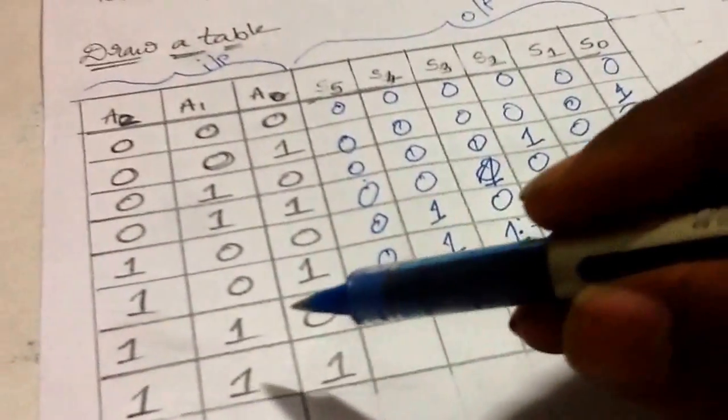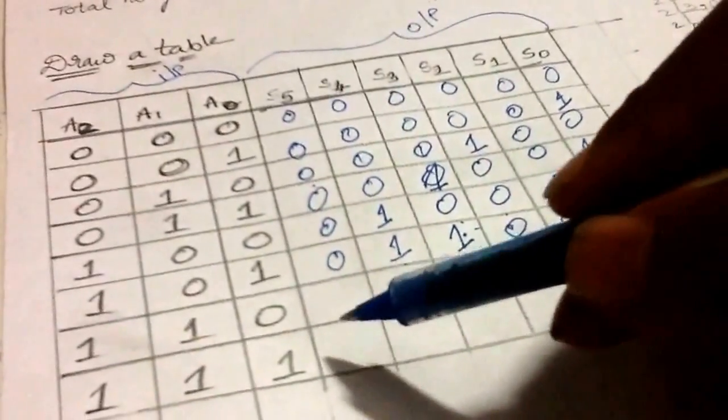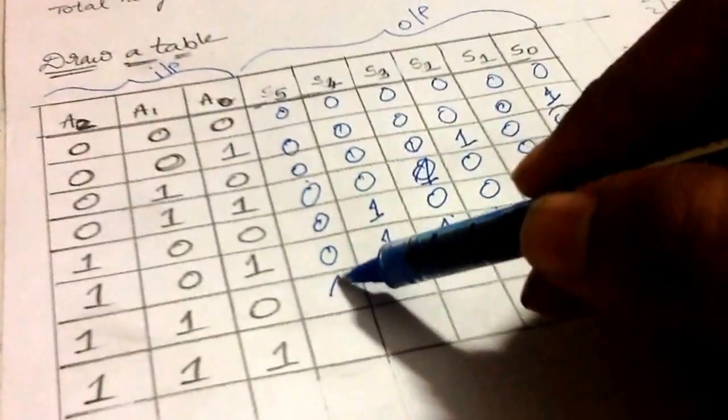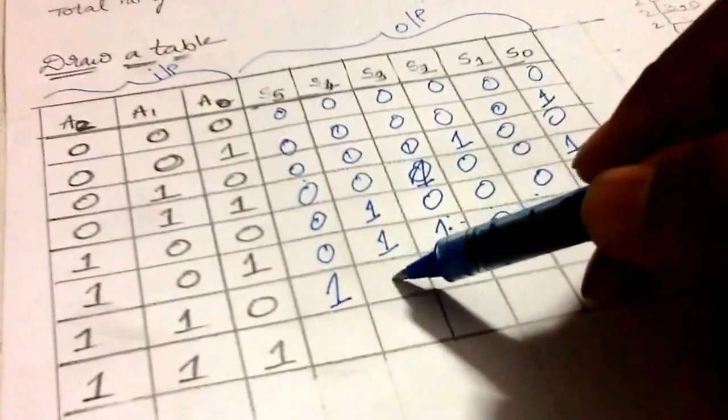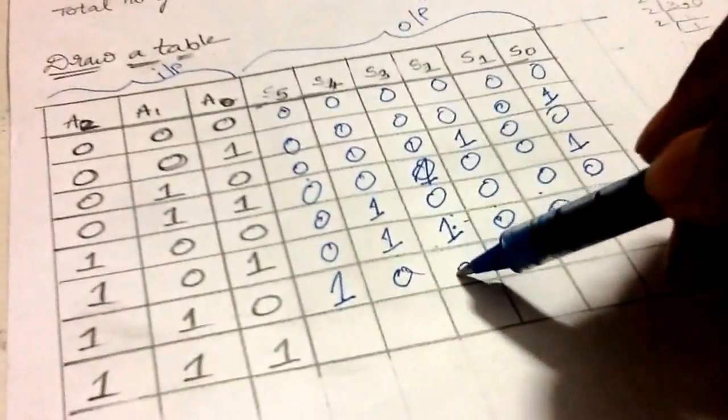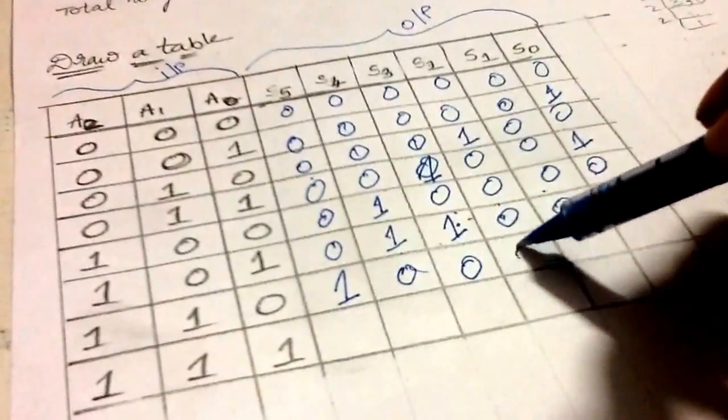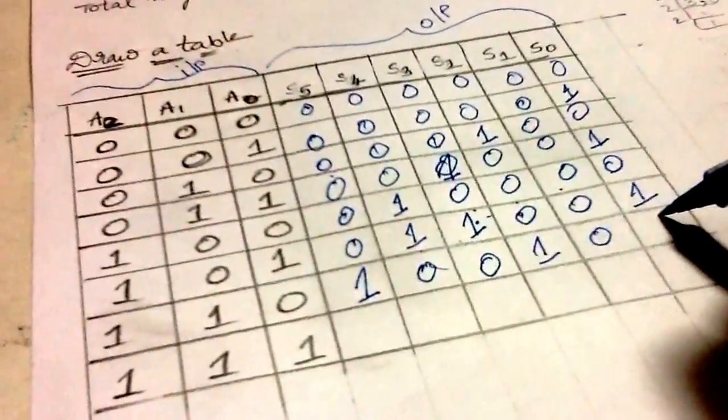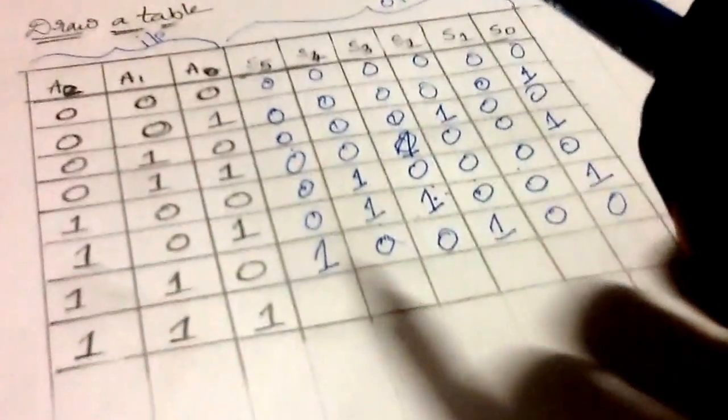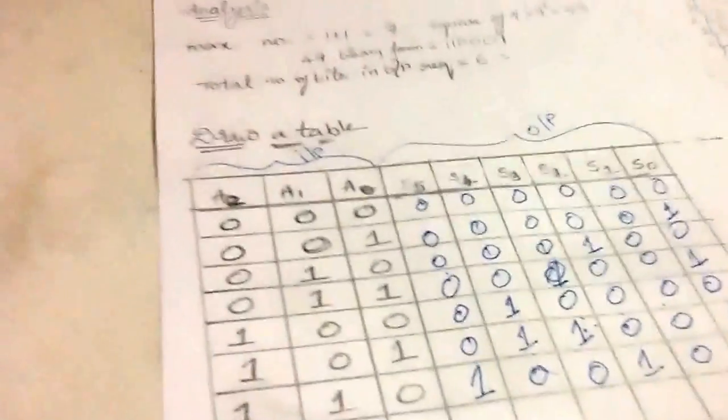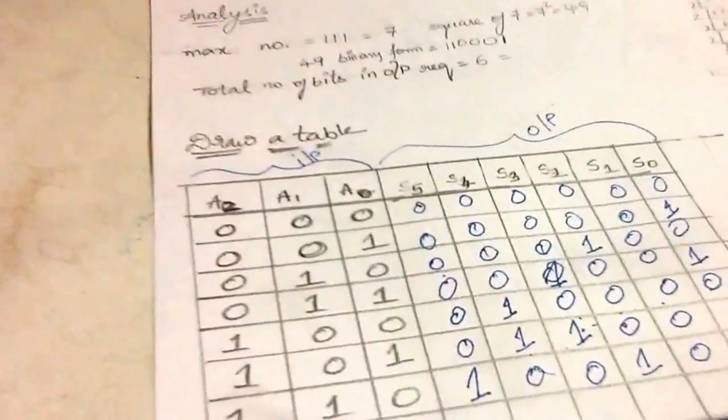Next, coming to 6, it has to be 36, which is 32 plus 4. Coming to 7, it has to be 49: 110001.